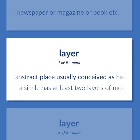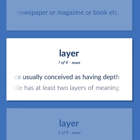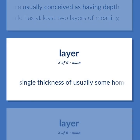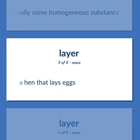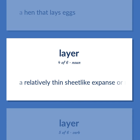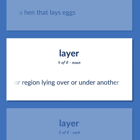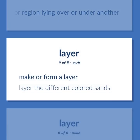An abstract place usually conceived as having depth. A simile has at least two layers of meaning. Single thickness of usually some homogeneous substance. A hen that lays eggs. A relatively thin sheet-like expanse or region lying over or under another. Make or form a layer. Layer the different colored sands.